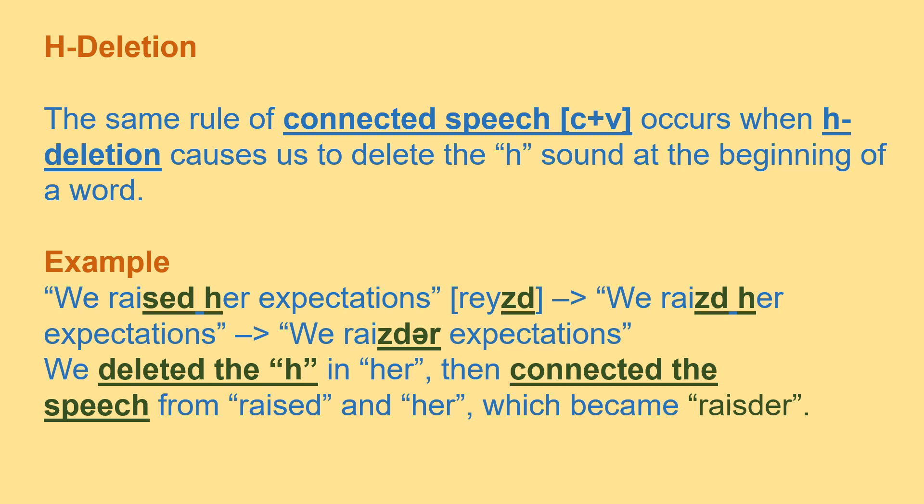The same rule of connected speech — consonant plus vowel — occurs when H-deletion causes us to delete the /h/ sound at the beginning of a word. For example: 'We rise her expectations.' We delete the /h/ in 'her' and then connect the speech from 'rise' and 'her,' which becomes 'rised her expectations' — 'we rise her expectations.'